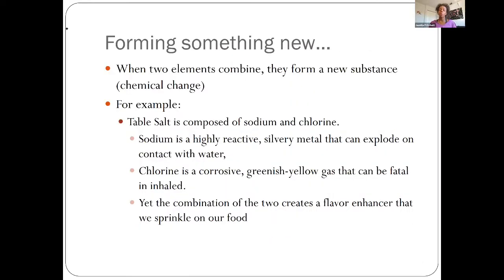We learned back in chapter one that when we're combining things in a chemical change manner, something new must be formed. So when two elements combine together to form a new substance, that process is considered a chemical change. For another example, think about table salt, which has a formula of NaCl. Sodium by itself is a highly reactive silvery metal that can explode if you put it in water, whereas chlorine is a corrosive greenish-yellow gas that can be fatal if inhaled. However, when these things come together, we create something new that we can actually ingest.